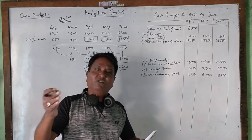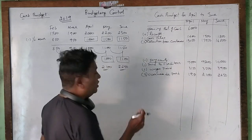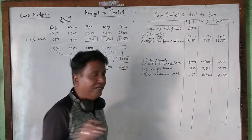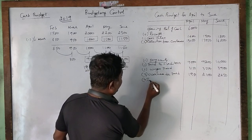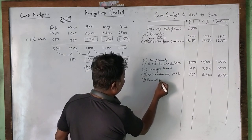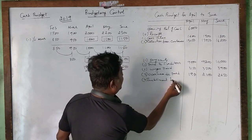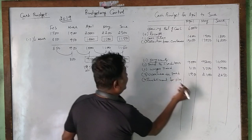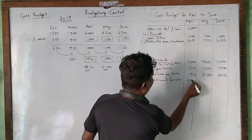The installment payment for plant and machinery starts from April, with 2,000 rupees per month payable from April onwards in the year.